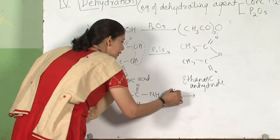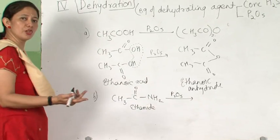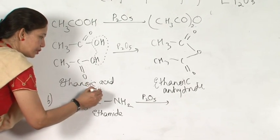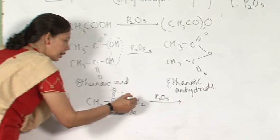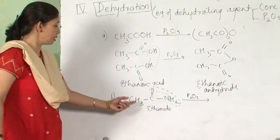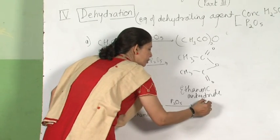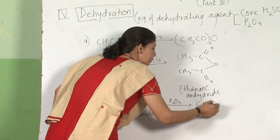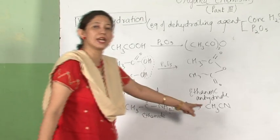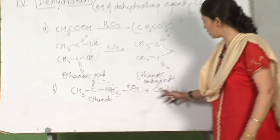I am taking a dehydrating agent. Dehydrating agent — just go for dehydration, remove the H2O molecule. Take this oxygen and this H2O. What is left? CH3CN. This is CH3CN — cyanides. Cyanides are nothing but nitriles, and hence the name goes here.